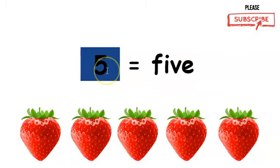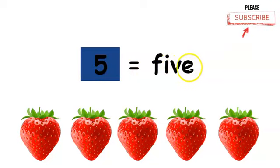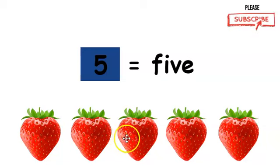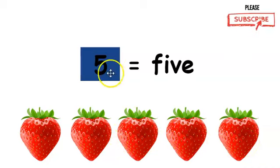This is number five and this is the word five. How many strawberries do we have, boys and girls? Let's count. One, two, three, four, five. Five strawberries.